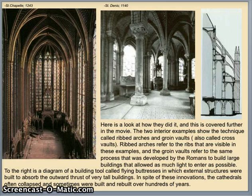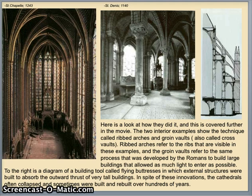The black and white picture is the interior of Saint Denis, the church first built by Abbot Suger. The two interior examples show the technique called ribbed arches and groin vaults, also called cross vaults. Ribbed arches refer to the visible ribs in these examples, and the groin vaults are the same process developed by the Romans to build their large forum buildings. These groin vaults allowed as much light as possible to enter the buildings.